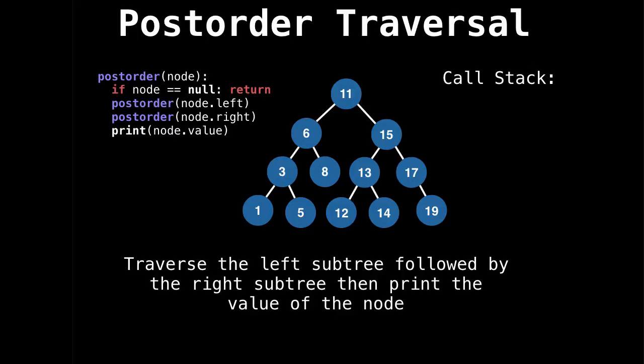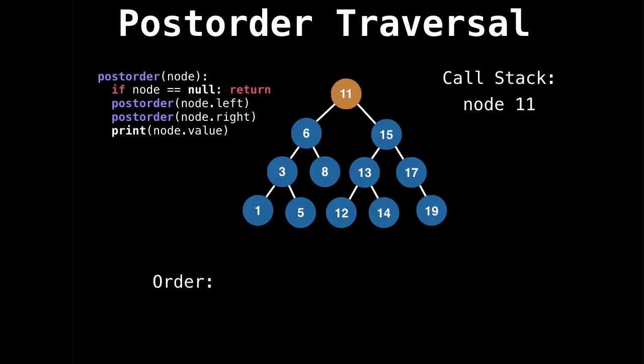Now let's look at the postorder traversal. And the postorder traversal says, traverse the left subtree, then traverse the right subtree. And after you're done doing both of those, only then print the value of the node. So this means if you look at our tree right now, the last value we're going to print should be 11, because we need to process 11's entire left subtree and 11's entire right subtree. So let's start at 11 and explore its left subtree.